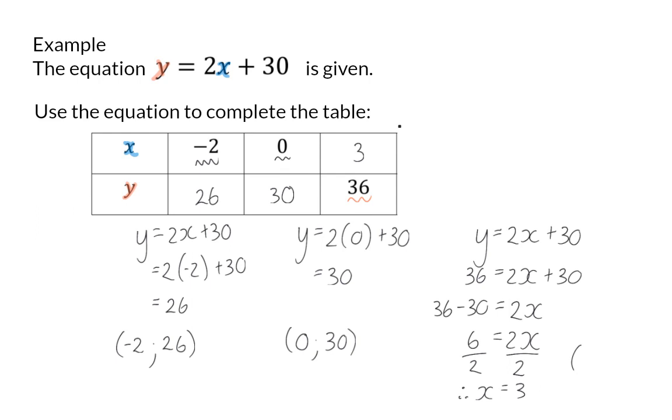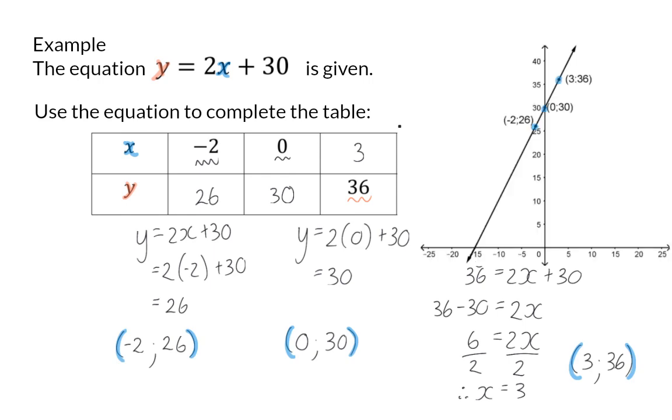So, here, my ordered pair is an x of 3 and a y of 36. When you now go and plot these ordered pairs or coordinates on a system of axes, you will see that it forms a straight line.